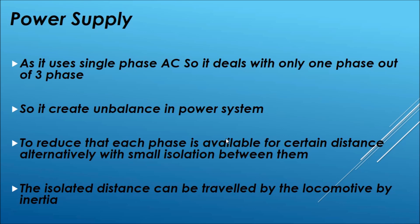Regarding power supply, the train uses single-phase AC. However, when a train collects power from one phase, the two remaining phases create an imbalance. To avoid this, the railway uses phase A for one section, phase B for the next section, and phase C for another, then repeats. There should be no electrical connection between phases A and B.